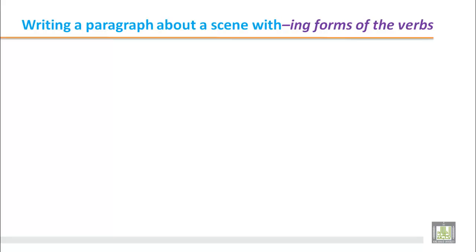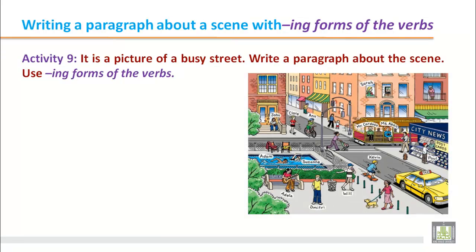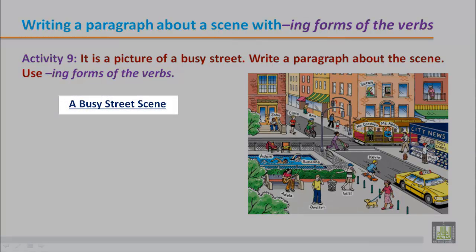Activity 9 is about writing a paragraph about a scene using -ing forms of the verbs. There is a picture of a busy street. At present, what are the people doing in the picture? You are going to describe it using -ing forms of the verbs.